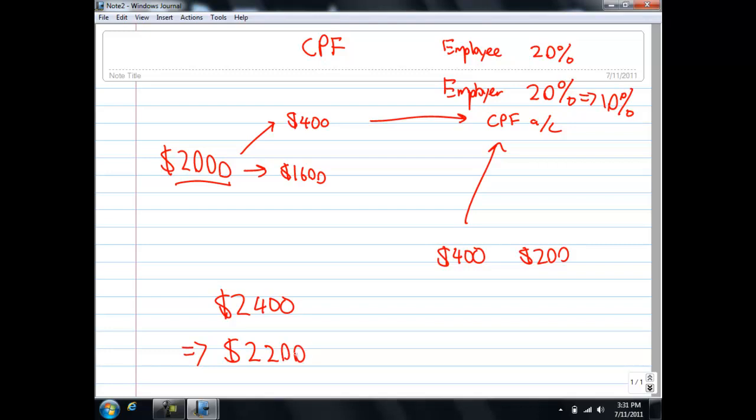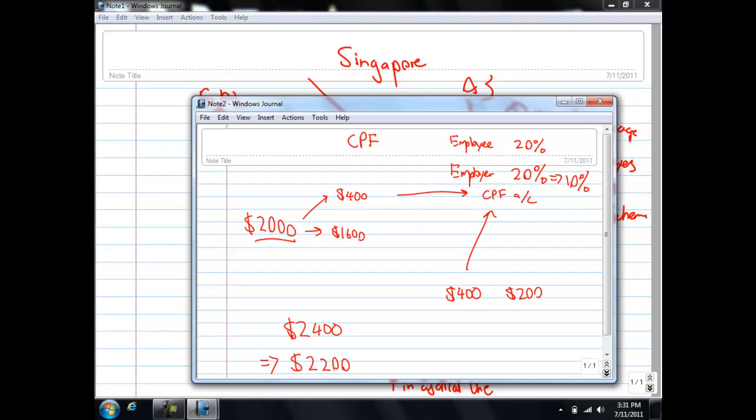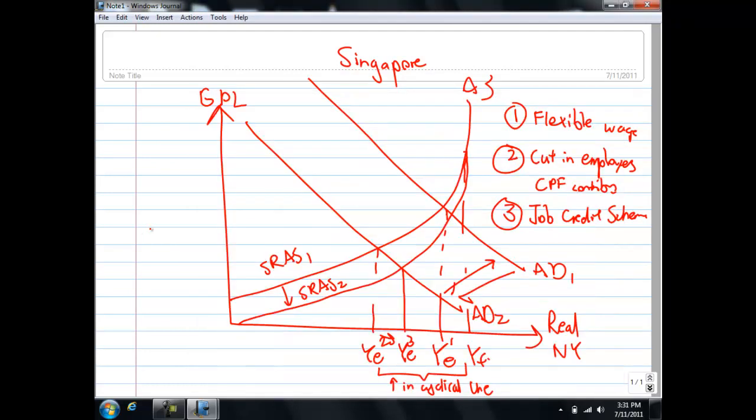From the firm's perspective, the cost of hiring you has just gone down. So as the cost of hiring goes down, this will also shift the SRAS1 to SRAS2, thereby achieving the same fall in cyclical unemployment.